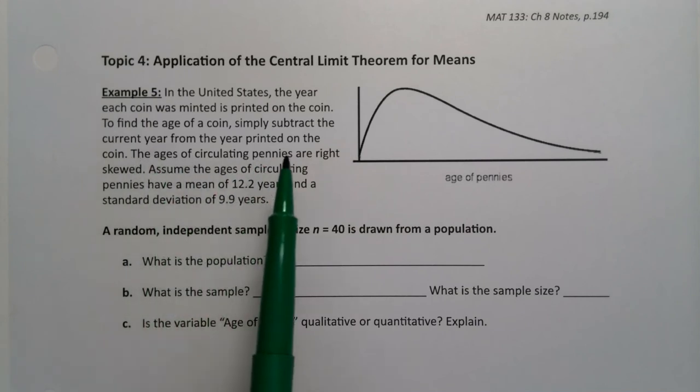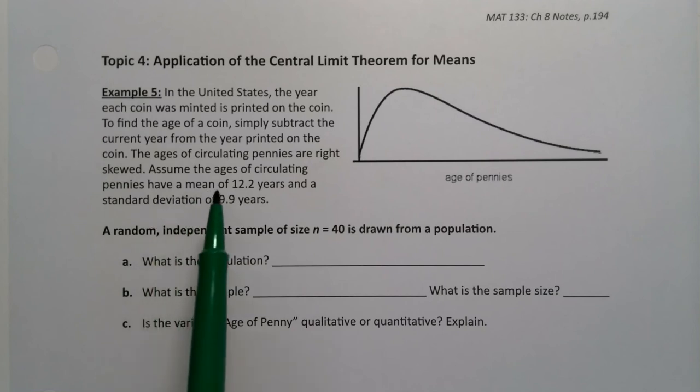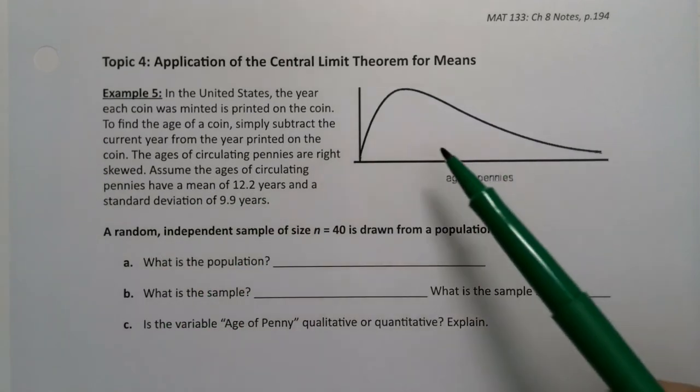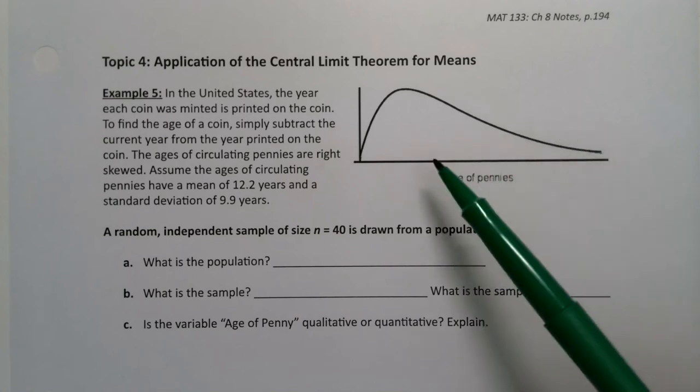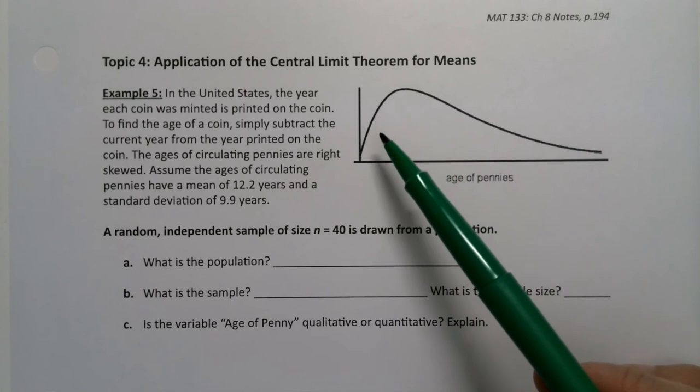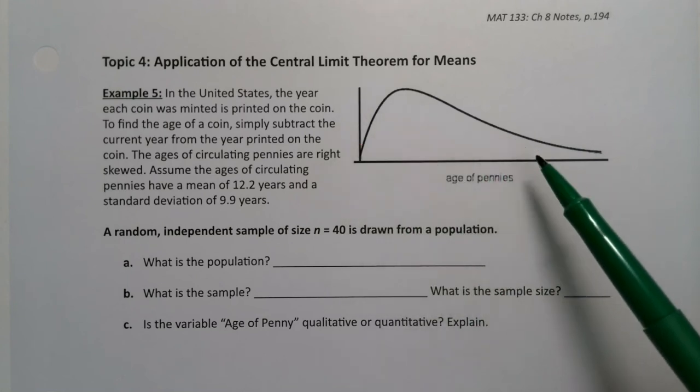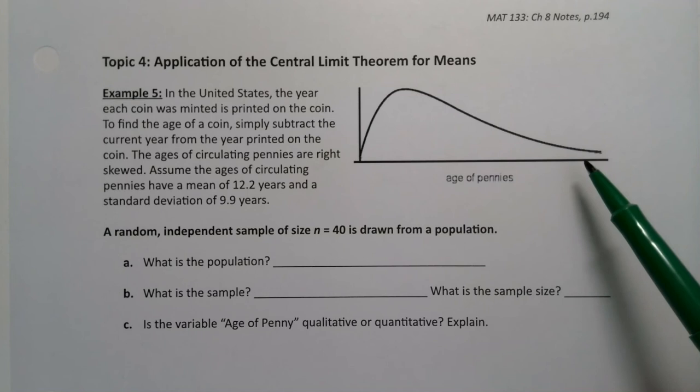The age of circulating pennies are right skewed. Assume the ages of circulating pennies have a mean of 12.2 and a standard deviation of 9.9. So see if this part makes sense. Age of pennies is right skewed. Because most pennies are within the last 30 years and the older you go for a penny, the more rare it is.